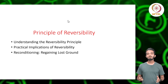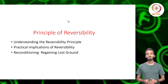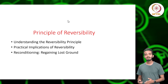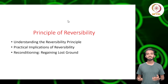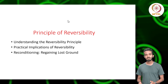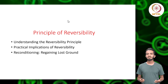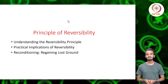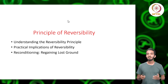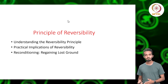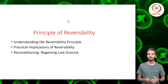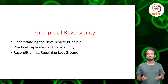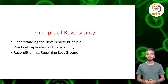Reversibility might sound daunting, but it's not a dead end. The process of reconditioning offers a structured pathway back to peak performance. By understanding the progressive stages of reconditioning, employing strategies that balance recovery and growth, and addressing the psychological hurdles, individuals can navigate their way back effectively. In conclusion, the principle of reversibility serves as both a cautionary tale and a beacon of hope — while it warns athletes of the potential losses from inactivity or inconsistency, it also shines a light on the path back, emphasizing adaptability and resilience. Understanding our body's responses, both in growth and regression, empowers us to make informed choices, ensuring a more holistic and sustained fitness journey.